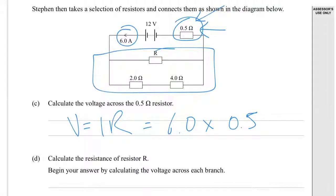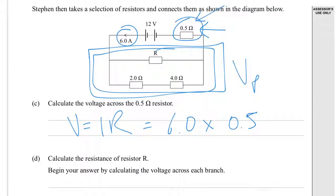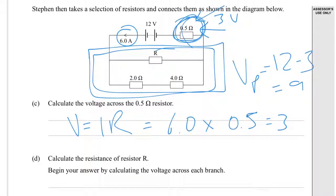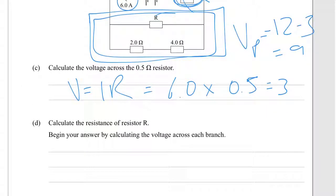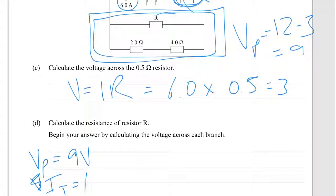Calculate the resistance of resistor R — begin by calculating the voltage across each branch. Considering the parallel section only, the voltage in the parallel section is going to be 12 minus 3, which equals 9 volts, because we've lost 3 volts across the series resistor at the top. So the voltage across the parallel branch is 9 volts, and the total current is 6.0 amps.